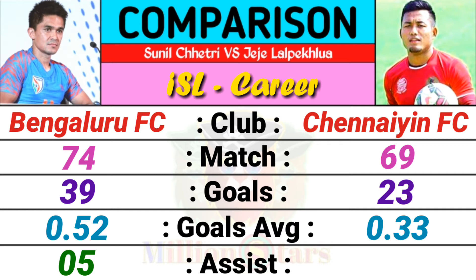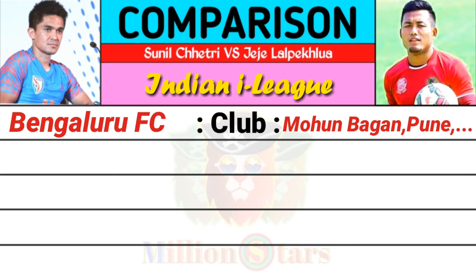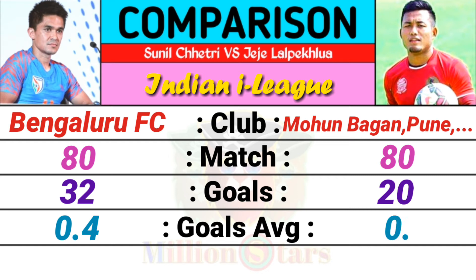Indian High League comparison: Sunil Chhetri's club is Bengaluru FC. JJ's clubs are Mohun Bagan, Pune, and Depo club. Matches: Sunil is 80 and JJ is 80. Goals: Sunil is 32 goals and JJ is 20 goals. Goals average: Sunil is 0.4 and JJ is 0.25.